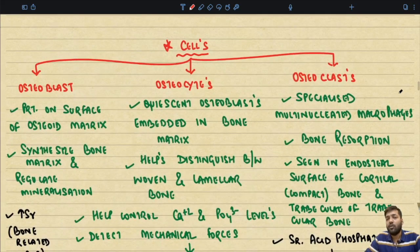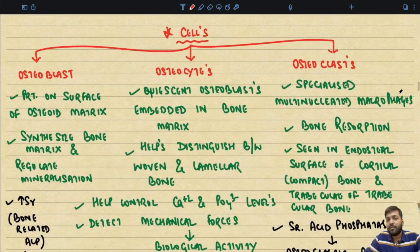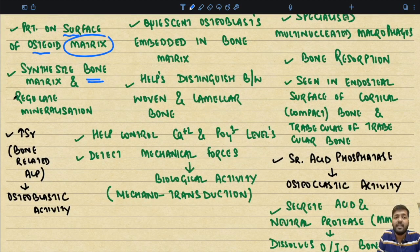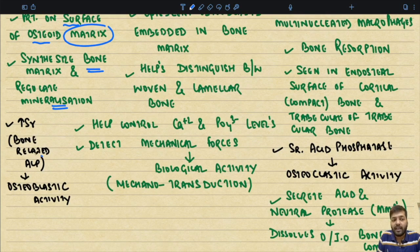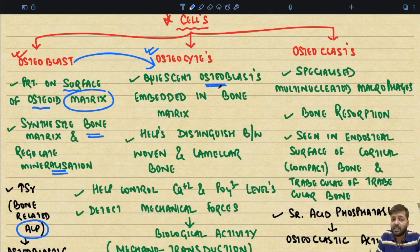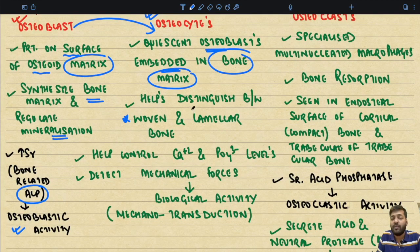Now discussing the different cells present in bone. The osteoblast is present on the surface of the osteoid matrix; its main function is to synthesize bone matrix and regulate mineralization. Increased serum bone-related alkaline phosphatase is also reflective of osteoblastic activity, in addition to osteopontin. The second type of cell is the osteocyte — osteoblasts that have performed their function get embedded within the bone matrix and become osteocytes, the quiescent osteoblasts embedded in bone matrix.